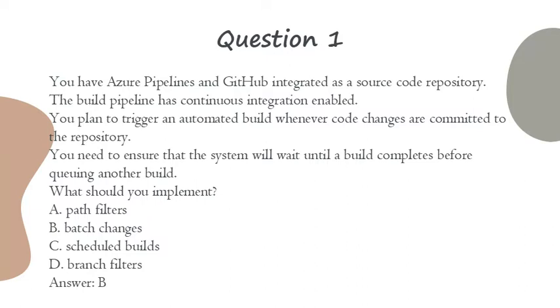A. Path filters. B. Batch changes. C. Scheduled builds. D. Branch filters. Answer: B.